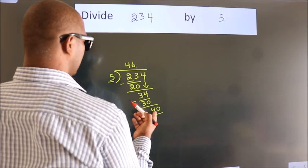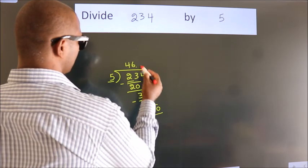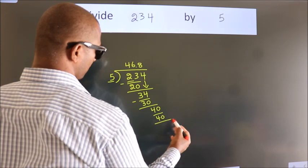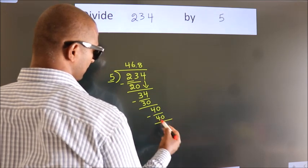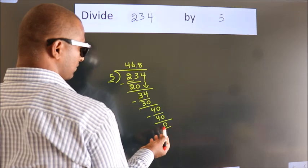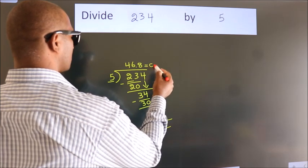When do we get 40 in the 5 table? 5 times 8 is 40. Now we subtract, we get 0. We got remainder 0. So this is our quotient.